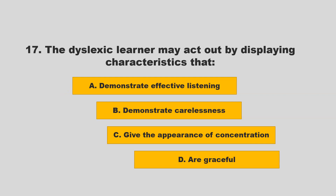The dyslexic learner may act out by displaying characteristics that: A) demonstrate effective listening; B) demonstrate carelessness; C) give the appearance of concentration; D) are graceful. If you chose B — demonstrate carelessness — you are correct.